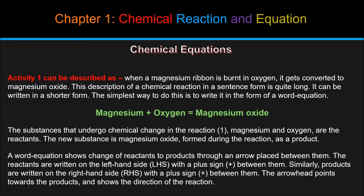A word equation shows change of reactants to products through an arrow placed between them. The reactants are written on the left-hand side, LHS, with a plus sign between them. Similarly, products are written on the right-hand side, that is RHS, with a plus sign between them. The arrowhead points towards the products and shows the direction of the reaction.